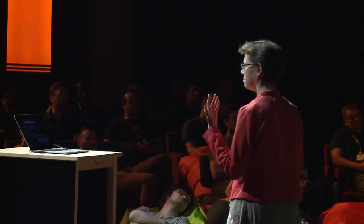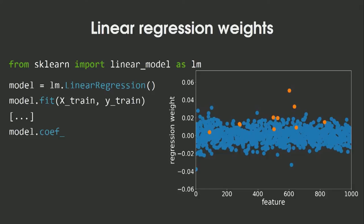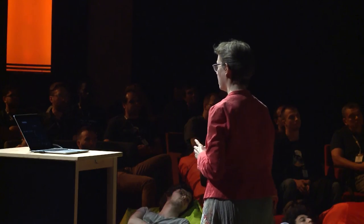Since I've been looking at features independently and simulated the data using a linear model, maybe I should be doing linear regression. I can do that with scikit-learn, look at the weights of the features in my model, and here's what I get. I'm slightly better — I've picked up a second feature — but there's really no way to distinguish eight of my orange features from the blue ones. And if I try to predict on my test set, the prediction is really bad: I have an RMSE of 0.21 and the predictions don't look correlated to the true values.